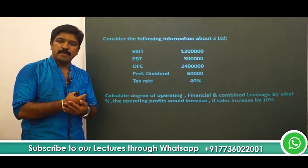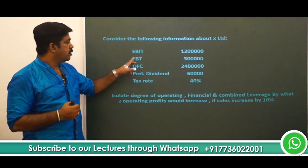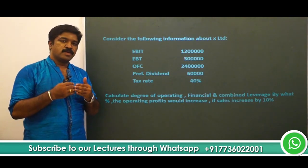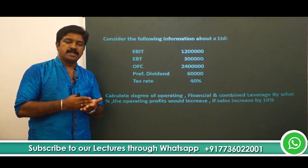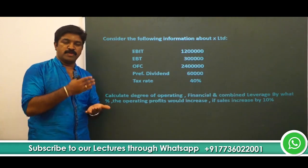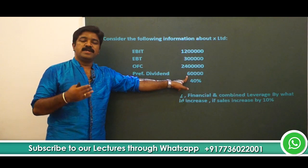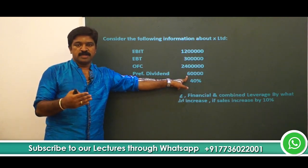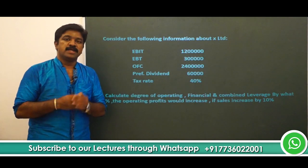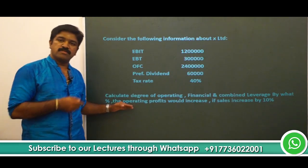Then comes the financial leverage — it is EBIT divided by EBT. In this process, you have to make a small calculation because in financial leverage, when you take EBIT (earnings before interest and taxes), if there is a preference dividend, you should factor that also. You need to go back to the profits before payment of preference dividend as well. So some small adjustments are required at that point. Combined leverage is not a big deal — I will discuss it at the appropriate time.